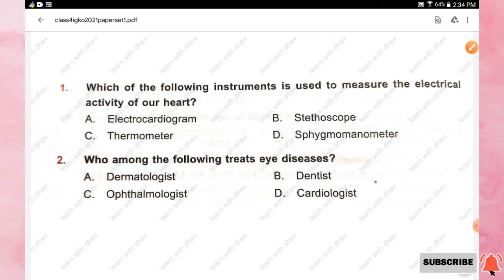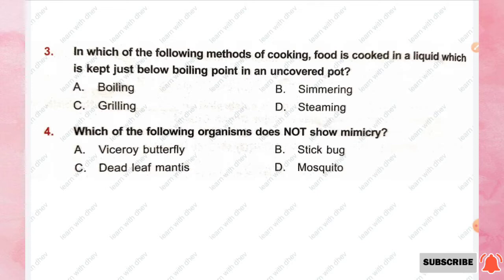Question number three: in which of the following methods of cooking is food cooked in a liquid kept just below boiling point in an uncovered pot? Options are boiling, simmering, grilling, and steaming. The right answer is simmering.